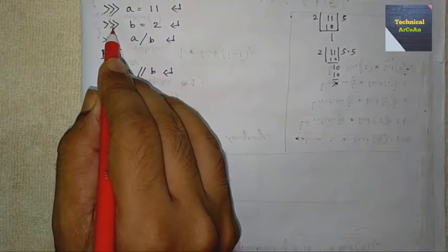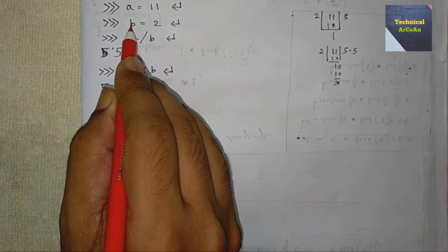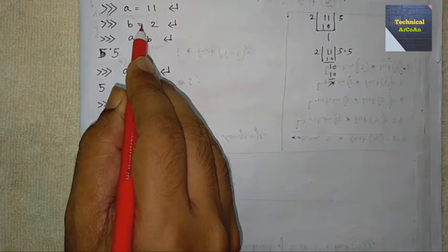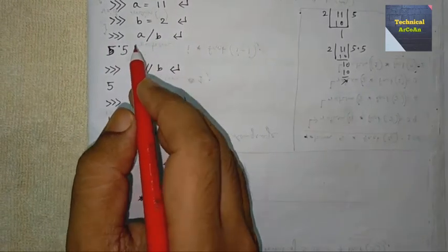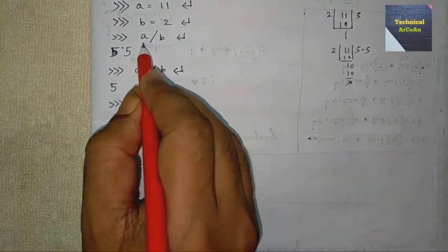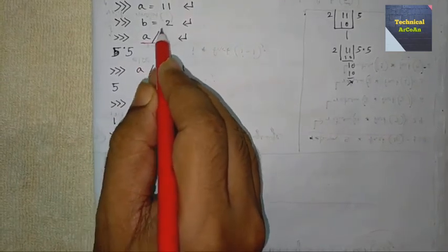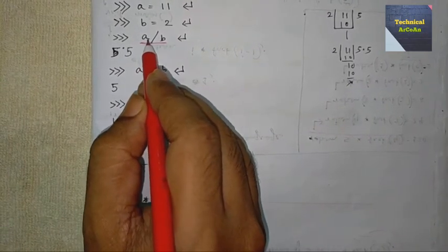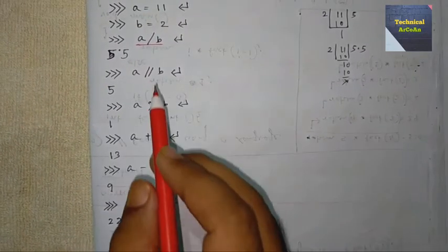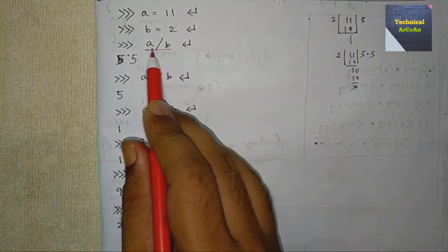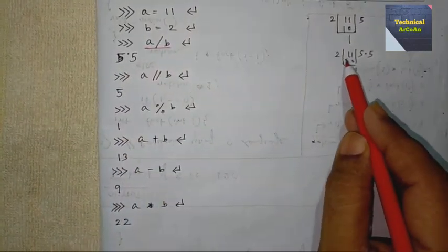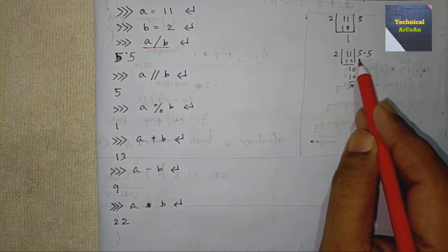When the prompt returns, we set variable b which stores the value 2. After enter, now we do the operation. First operation: floating point division. So we write a / b. When we use the floating point division operator, we get the result in floating point form. When we divide 11 by 2, we get 5.5, so the output is 5.5.